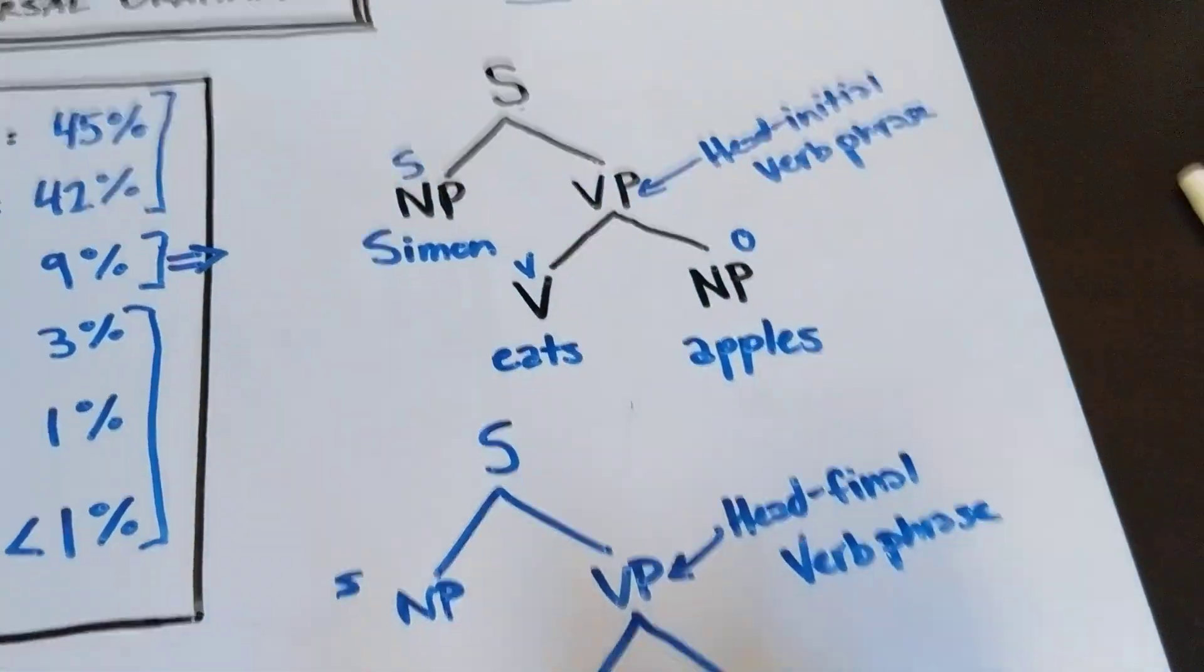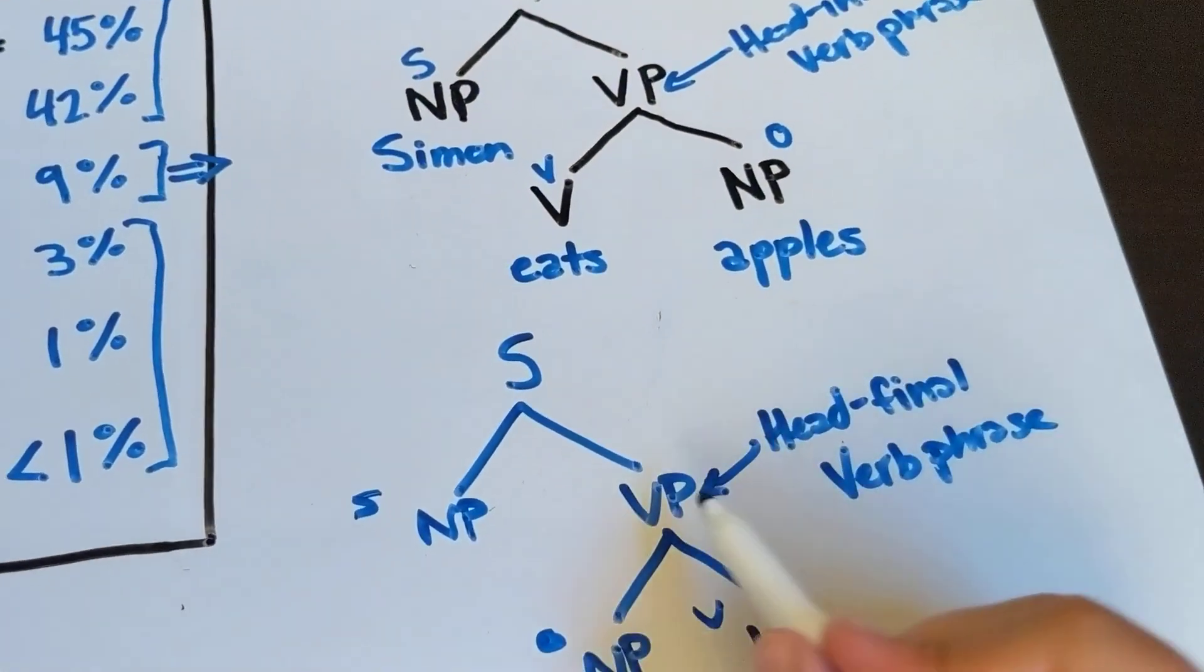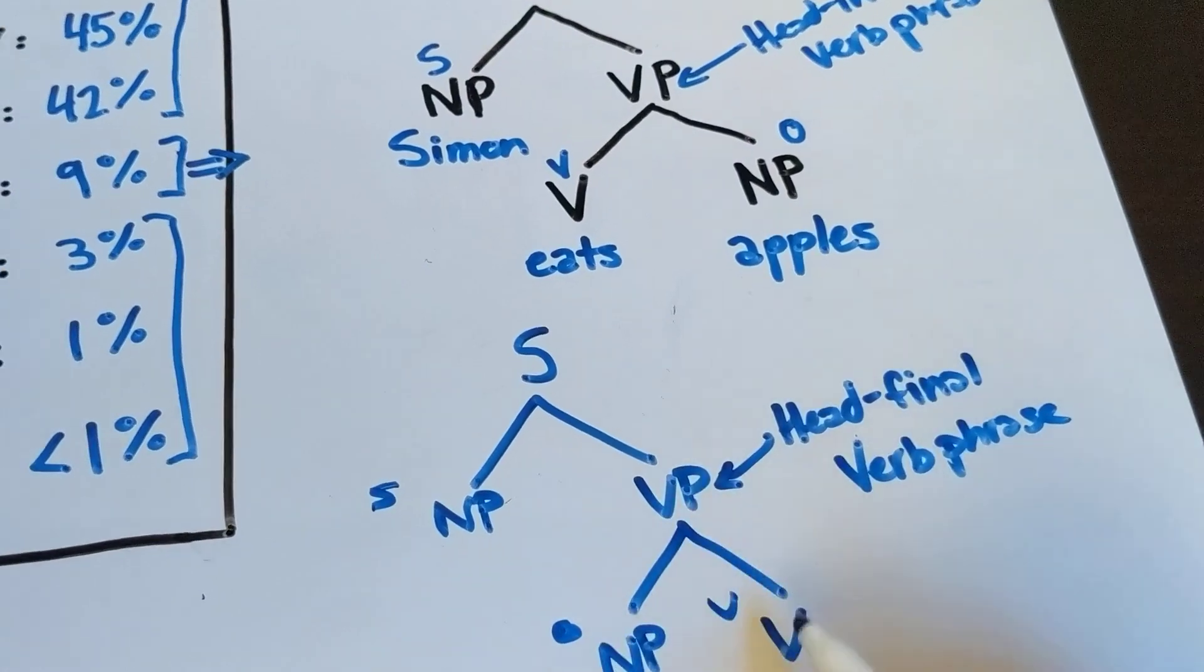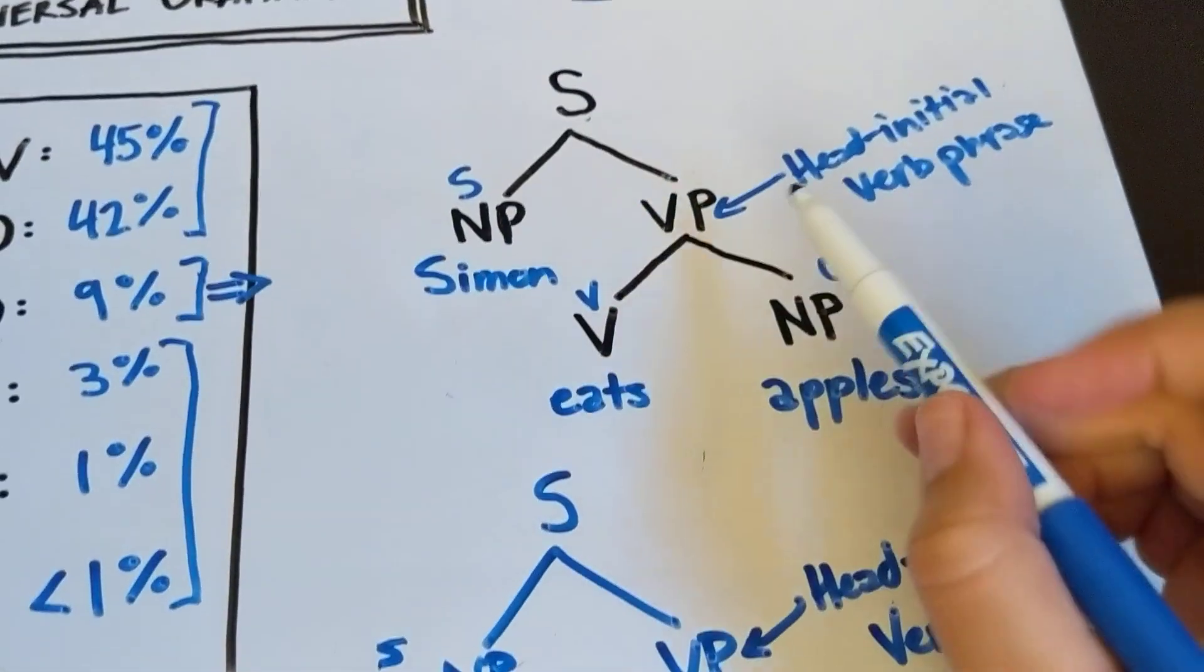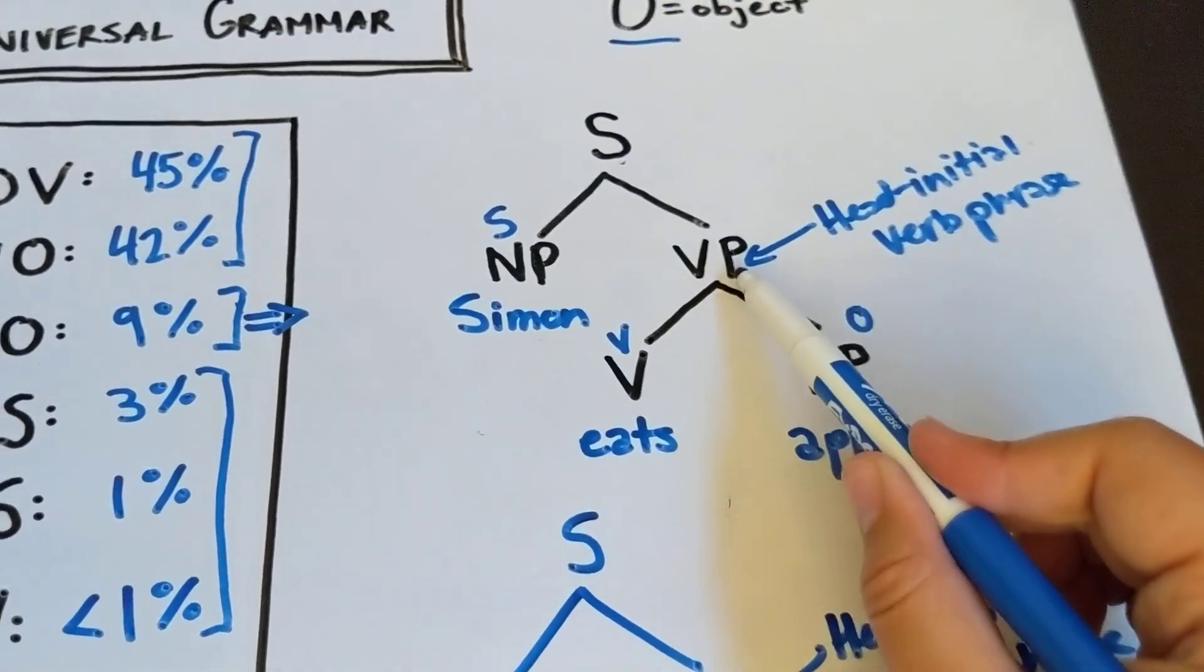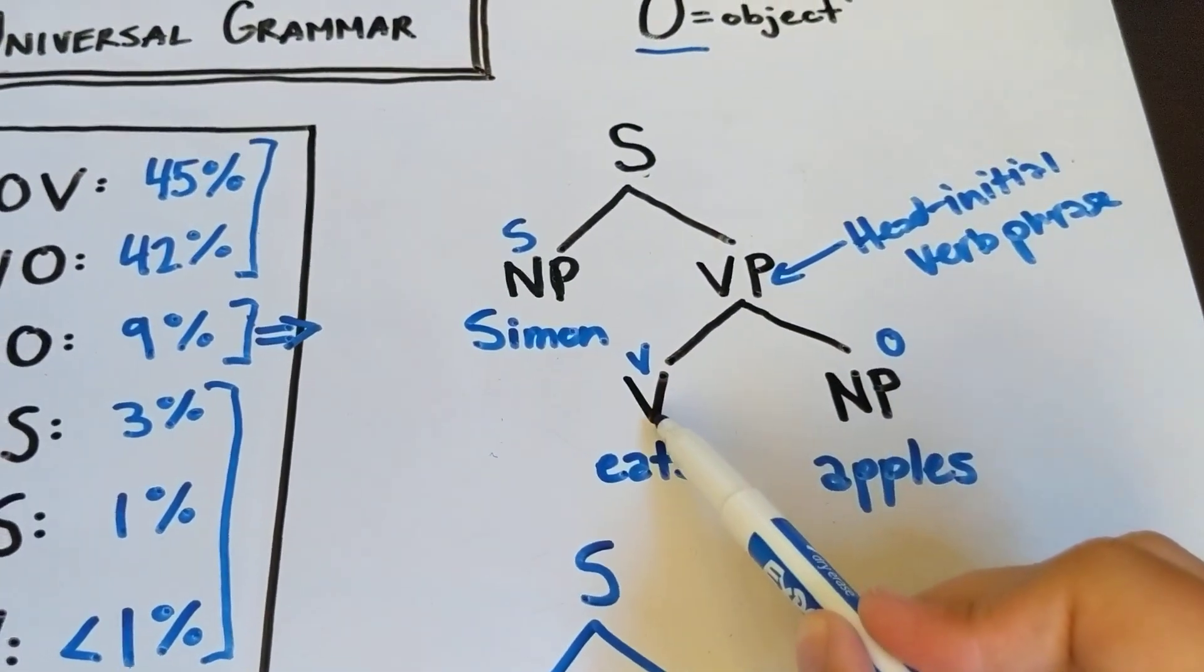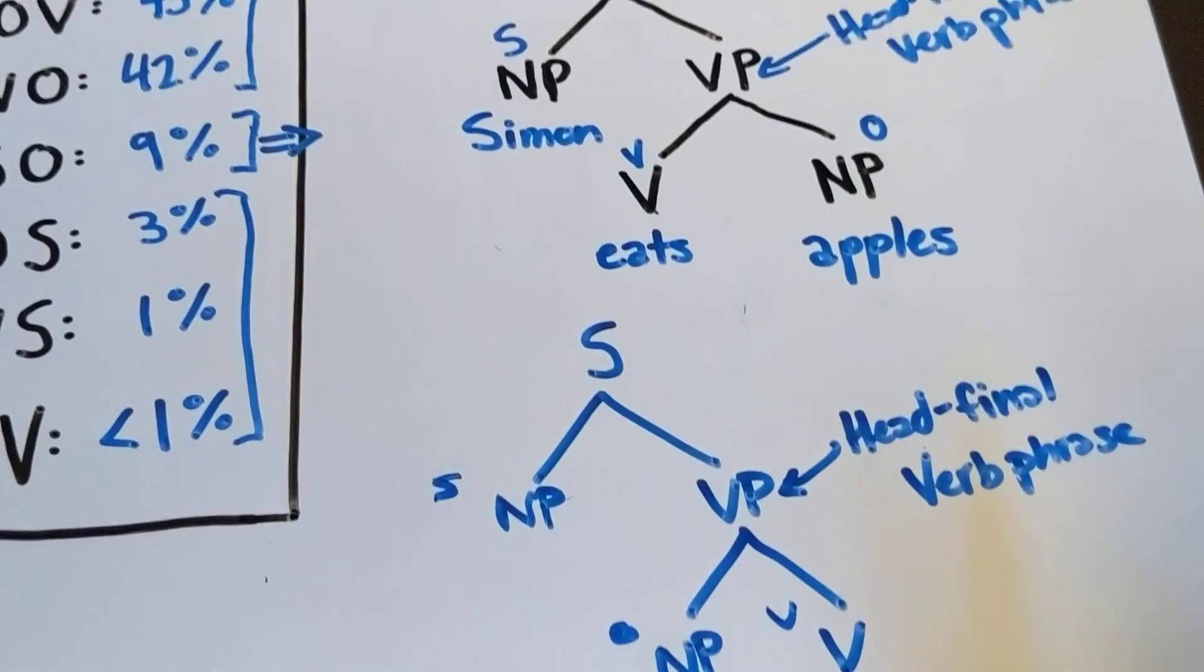And all we've done is rotate it. What this word head final means is that this is a verb phrase, and the last thing in the verb phrase is the verb that it's named after. This is a head initial verb phrase because it's a verb phrase, and the first thing in the verb phrase is the verb. So that's what head initial and head final mean.